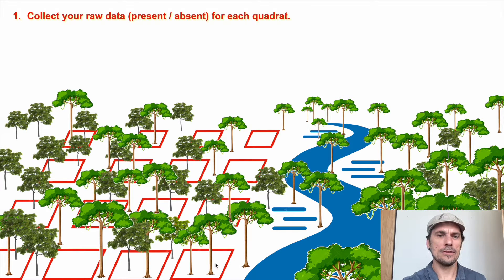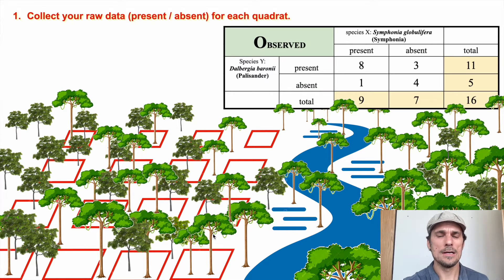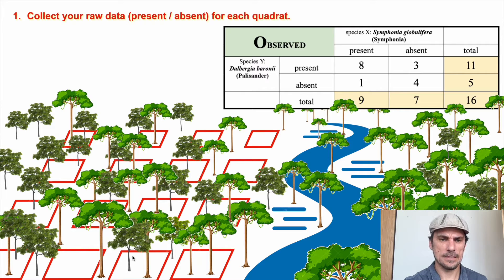Now all I have to do is my O — the observation in the Chi-squared test — count. Light green is Symphonia. So in this quadrat I see Symphonia present and Palisander absent — I mark one there. I go to the next quadrat and I see a Symphonia tree and a Palisander tree, the dark green in this case. So present, present — I would mark one there.